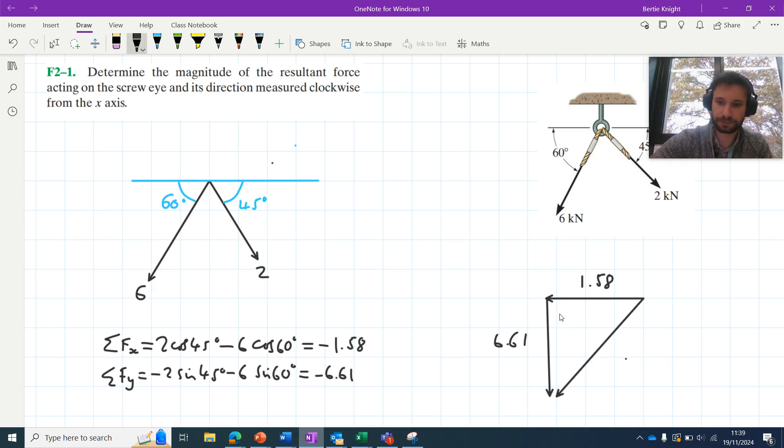So we could use Pythagoras theorem here. I'm not gonna spoon feed Pythagoras theorem to you guys. Here I would just do 1.58 squared plus 6.61 squared. Don't have to include the minuses here since when you square a negative it becomes positive anyway. And this is equal to 6.8. So we can say that the magnitude of the resultant force here is equal to 6.8.